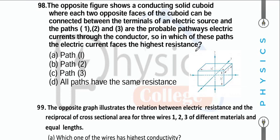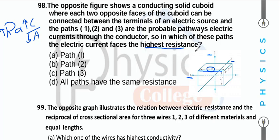A conducting cuboid with dimensions 1L, 2L, 3L. Current can pass along three different paths. For highest resistance, choose the path with longest length and smallest cross-section area: path along 3L with cross-section 2L×1L gives highest R. That corresponds to path 1.